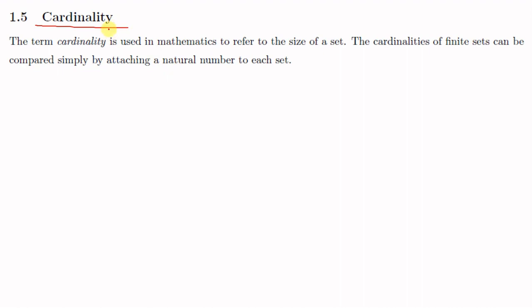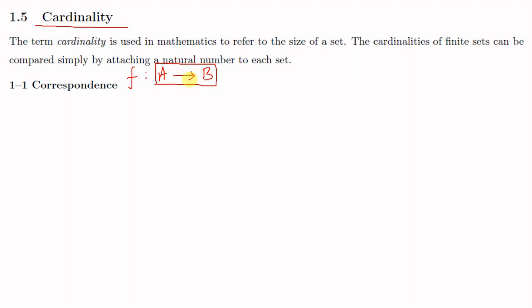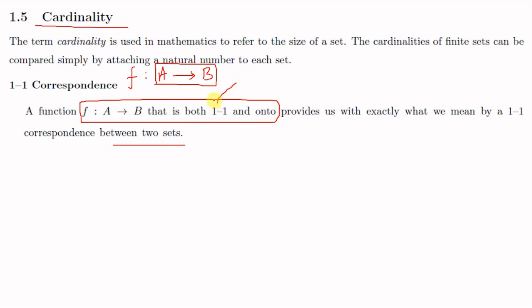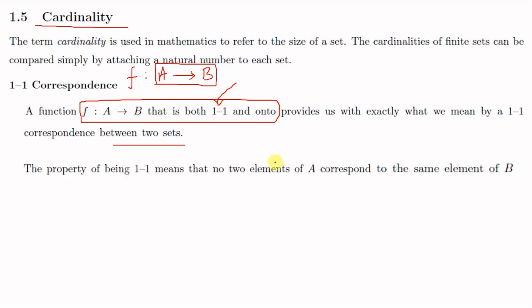For that, we first discuss something called one-to-one correspondence. Suppose you have two sets A and B. We say that there is a one-to-one correspondence between A and B if there exists a function f from A to B which is one-to-one and onto. To remind you, a function f from A to B is said to be one-to-one if no two elements of A correspond to the same element of B — that is, no two elements of A have the same image in B.